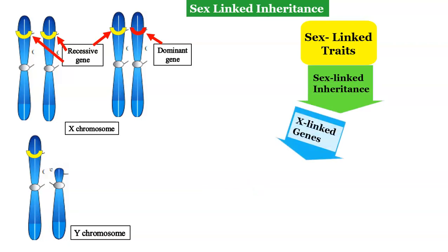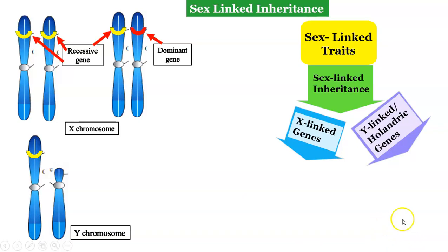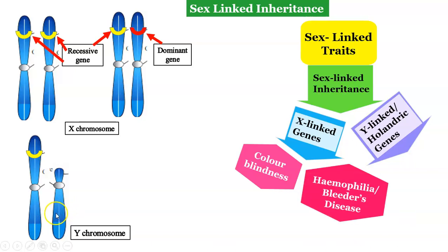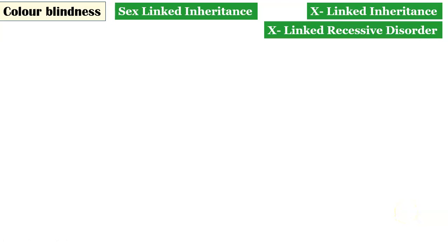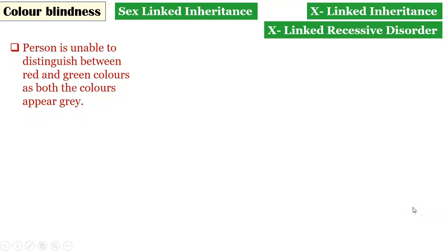Sex-linked inheritance is of two types: X-linked inheritance and Y-linked or cholandric gene inheritance. We will take examples of only X-linked genes. One is color blindness and the other is hemophilia or bleeder's disease. Other examples of X-linked inheritance include night blindness, myopia, and muscular dystrophy. Let us first discuss color blindness. It is a sex-linked disease showing X-linked inheritance and it is a recessive disorder, meaning the gene responsible for color blindness is a recessive gene.